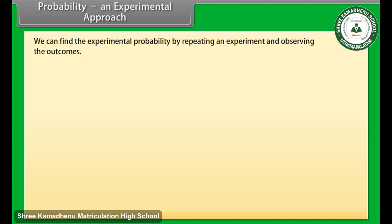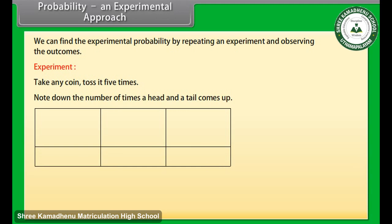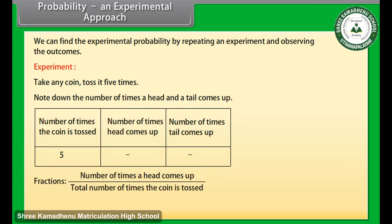We can find the experimental probability by repeating an experiment and observing the outcomes. Let's do an experiment. Take any coin, toss it five times. Note down the number of times a head and a tail come up and fill the given table. Then write the fractions. First one is number of times a head comes up upon total number of times the coin is tossed. And the second one is number of times a tail comes up upon total number of times the coin is tossed.